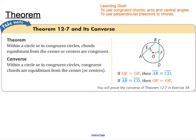Our fourth theorem, theorem 12-7 and its converse: within a circle or in congruent circles, chords that are the same distance from the center must be congruent. We have circle O with EO congruent to OF, and that tells us that chord AB and chord CD must be congruent. The converse is also true: if you draw AB and CD such that they're the same length, then the perpendicular distance from E to O must equal the perpendicular distance from O to F.